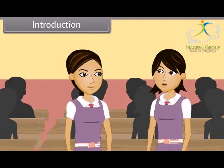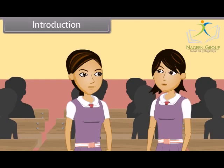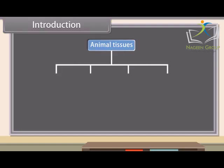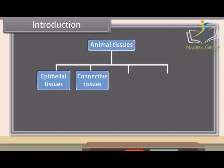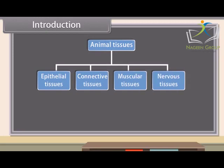Ankita, as we have already discussed earlier, animals are heterotrophic organisms. They cannot synthesize their own food, so they have to move in search of it. They also have to move in search of meat, shelter and other vital activities of life. For the accurate performance of vital activities, there are various tissues for every activity. On the basis of their functions, animal tissues are of four types: Epithelial, Connective, Muscular and Nervous.